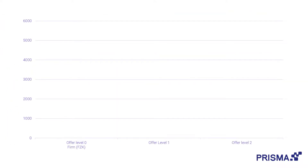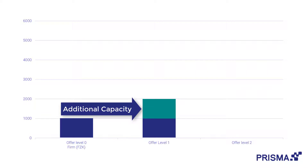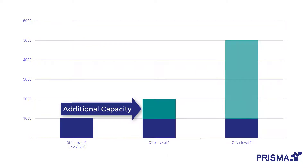For example, offer level 0, the existing capacity, may be at 1000 kWh per hour, with offer level 1 at 2000 kWh per hour and offer level 2 at 5000 kWh per hour.